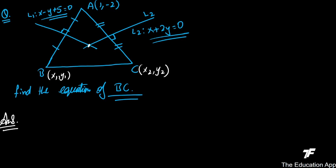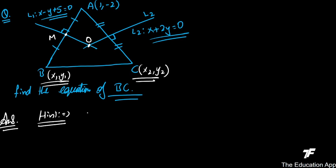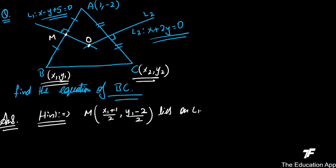Let M be the midpoint of AB. Its coordinates are ((x1+1)/2, (y1-2)/2). Since M lies on L1: (x1+1)/2 - (y1-2)/2 + 5 = 0. This gives one relation between x1 and y1. We need a second equation to solve for B's coordinates.